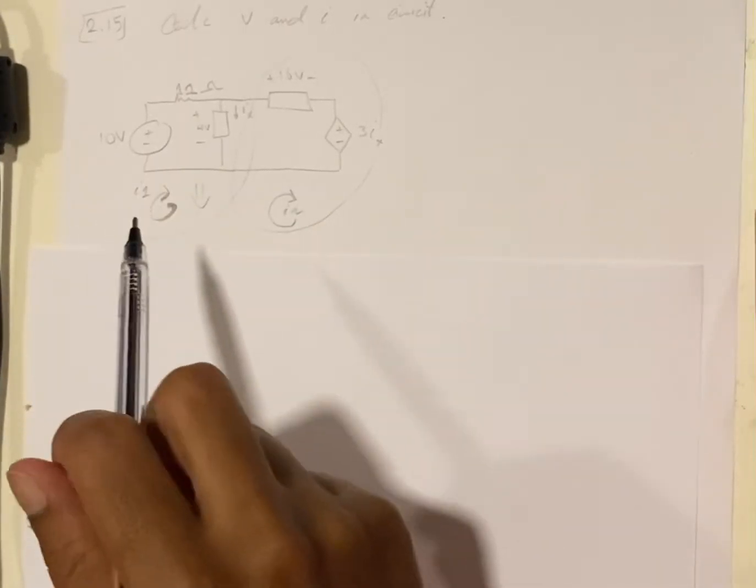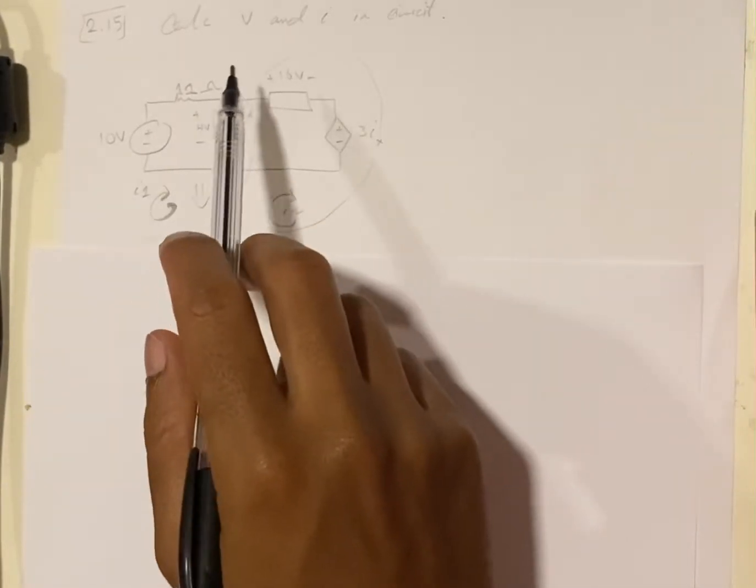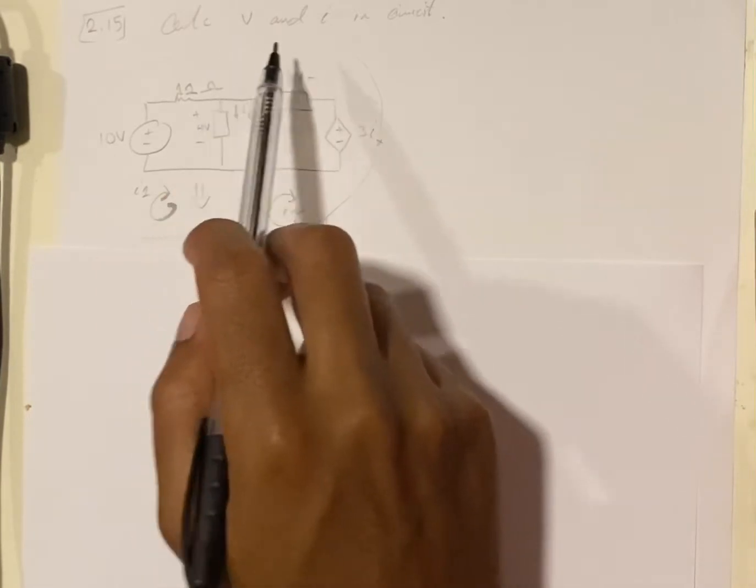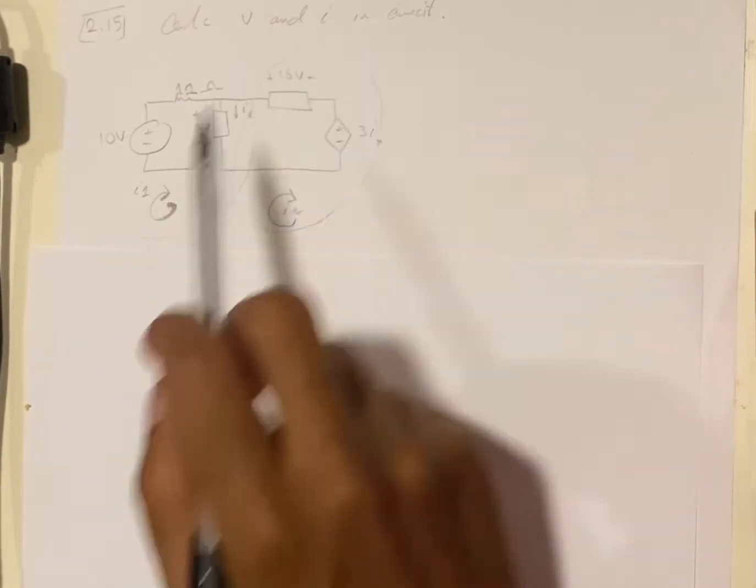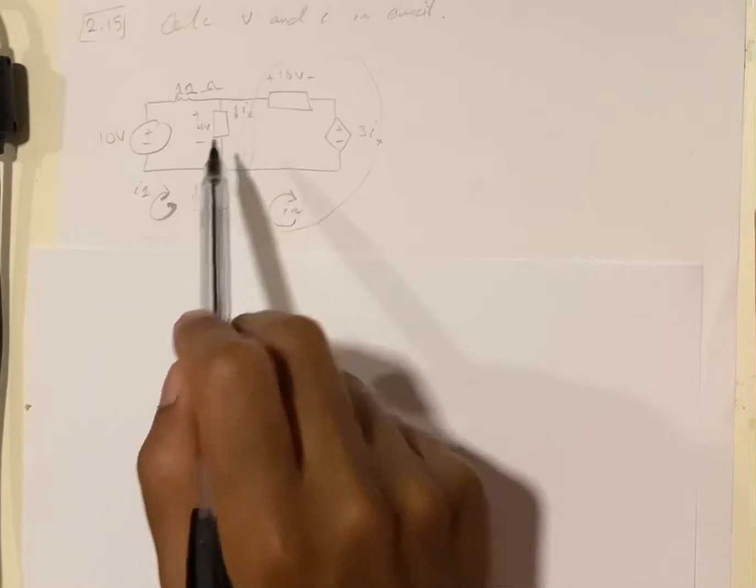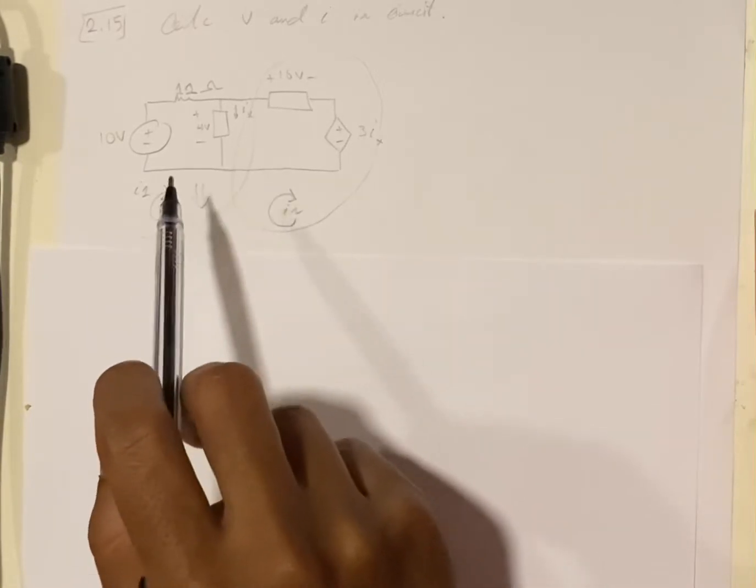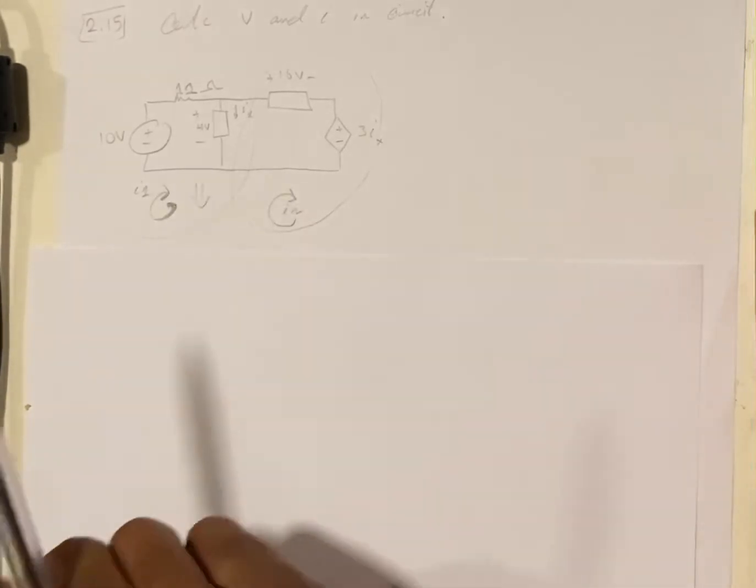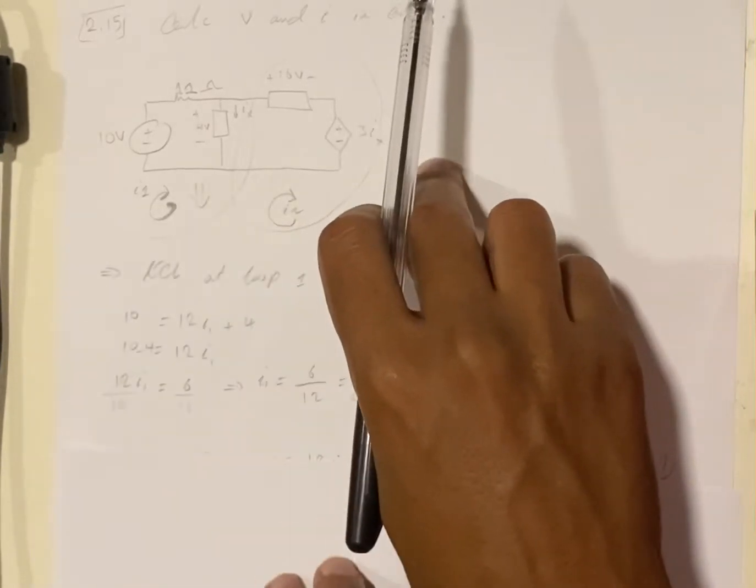Here we have question number 2.15 and they're asking us to calculate the voltage and the current in this circuit. As you can see here in this circuit we have two loops. I'm gonna solve for loop one.